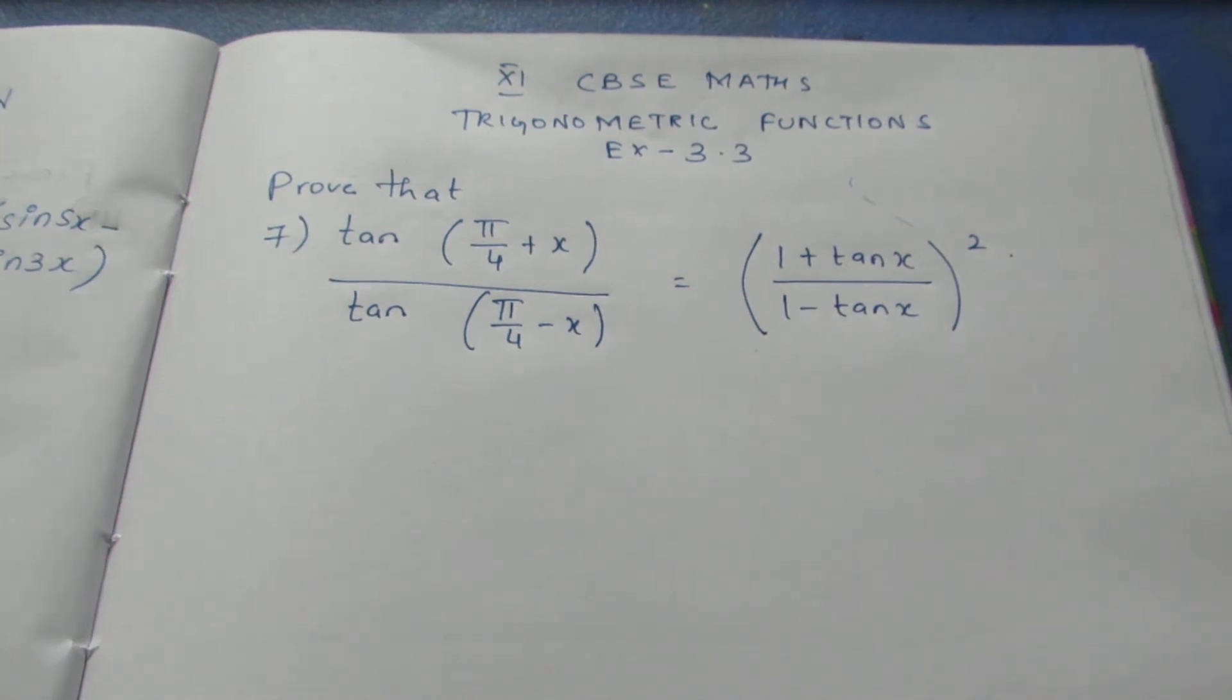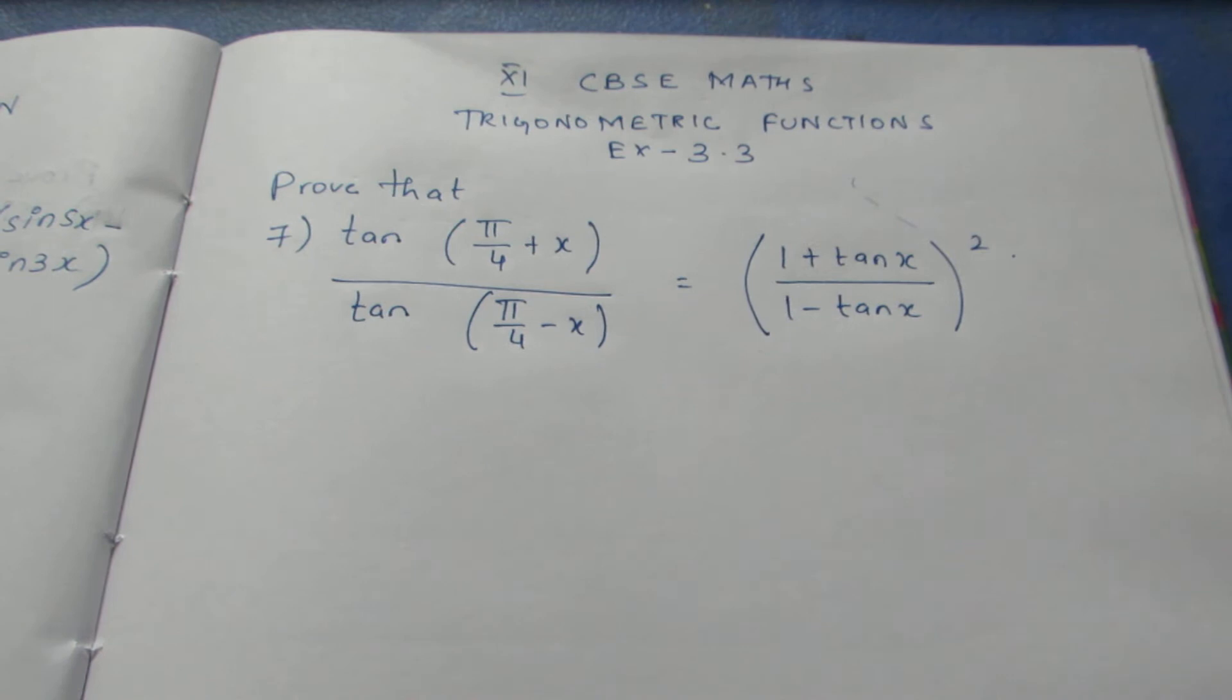Let's see the question. Prove that tan(π/4 + x) by tan(π/4 - x) is equal to (1 + tan x) by (1 - tan x) the whole square.